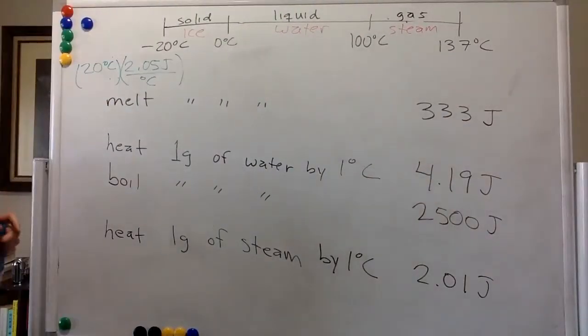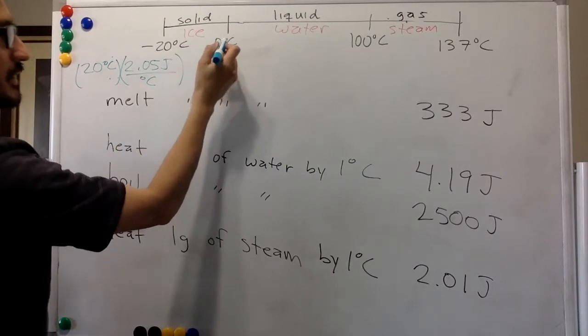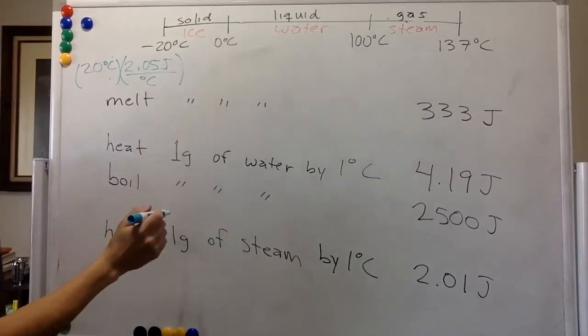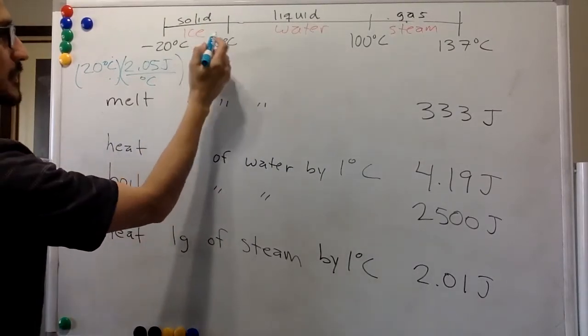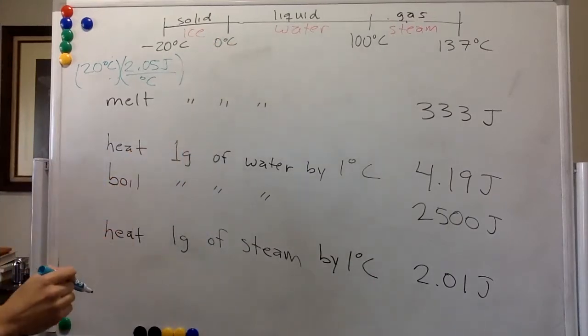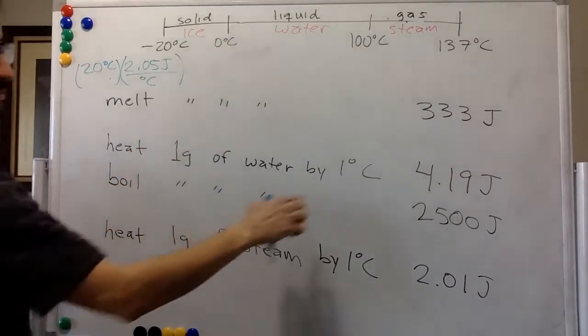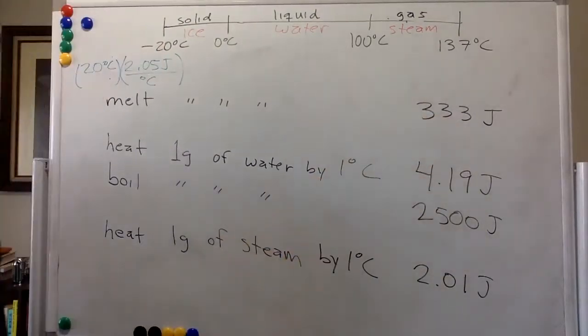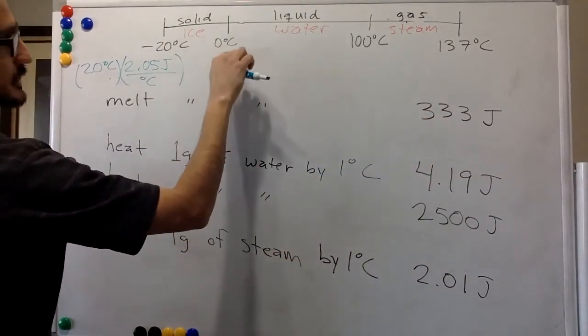And then over here, if we continue adding heat, the ice is not going to increase its temperature anymore. You need to pay this price, the 333 joules, to melt it, right?